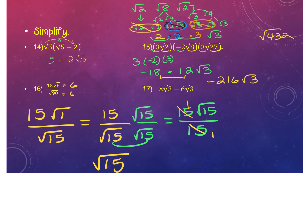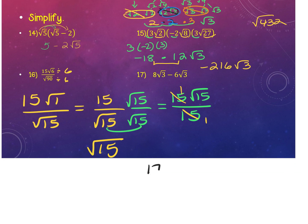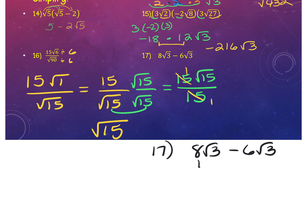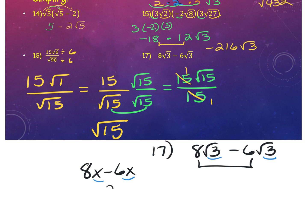For number 17: 8 square root 3 minus 6 square root 3. When subtracting or adding square roots, treat them like variables. Think of this as 8x minus 6x, where x is the square root of 3. Subtract the coefficients: this gives 2 square root 3.